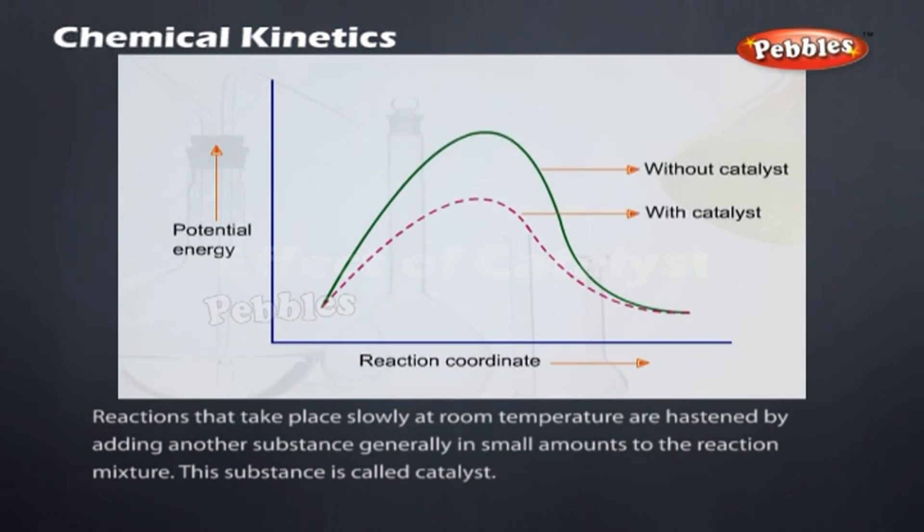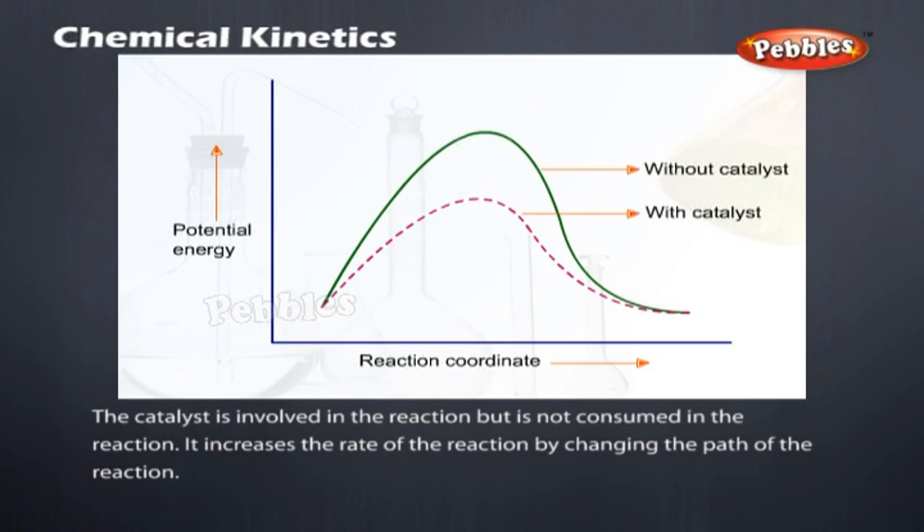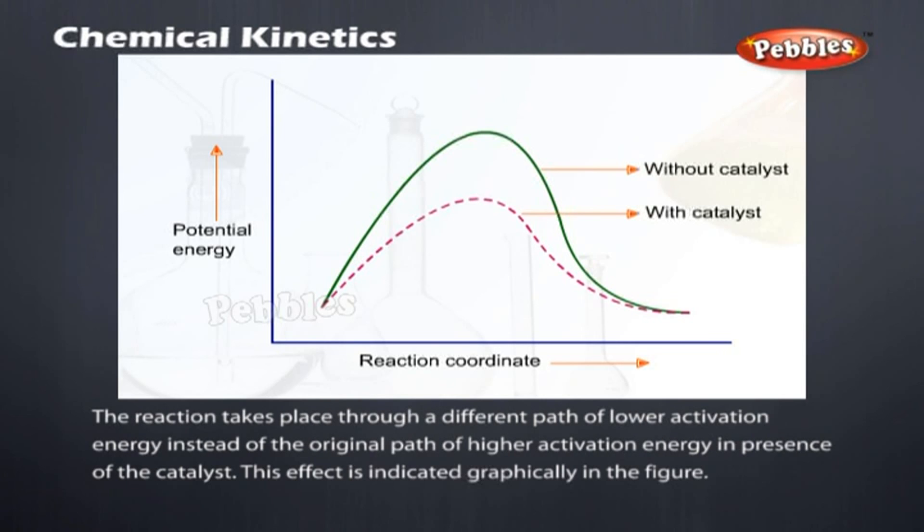Effect of catalyst. Reactions that take place slowly at room temperature are hastened by adding another substance, generally in small amounts, to the reaction mixture. This substance is called catalyst. The catalyst is involved in the reaction but is not consumed in the reaction. It increases the rate of the reaction by changing the path of the reaction. The reaction takes place through a different path of lower activation energy instead of the original path of higher activation energy in presence of the catalyst. This effect is indicated graphically in the figure.